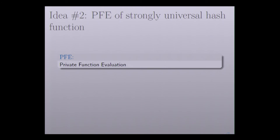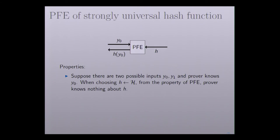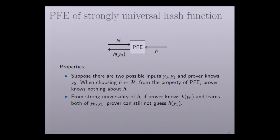The idea is to use private function evaluation (PFE) of strongly universal hash functions. The PFE functionality takes the hash function h from the verifier and the input y from the prover, and outputs h(y) to the prover. It has some useful properties. Suppose there are two possible inputs y0 and y1, and the prover only knows y0. When the hash function is chosen randomly from the hash family, from the PFE property the prover knows nothing about h. And from the strong universality of h, if the prover knows h(y0) and later learns both y0 and y1, the prover still cannot guess h(y1).